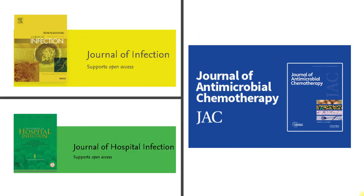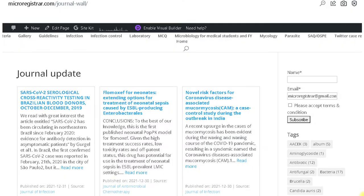Journal Articles: There are many infection and microbiology journals available. It is good practice for any professional to read eminent journals regularly. For this exam, I recommend you must read at least these three journals: The Journal of Infection, The Journal of Hospital Infection, and The Journal of Antimicrobial Chemotherapy. Read at least one year's worth of journals going back from your examination date. The microregistrar.com page is designed to auto-update daily with new articles published in these three journals, though it will not give full article access where the journal requires membership.